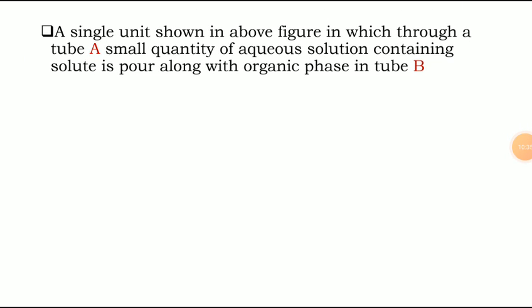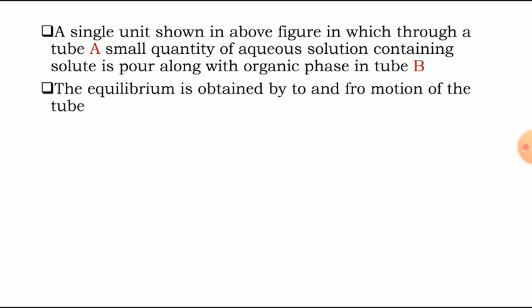The procedure: a single unit is shown in the above figure, in which through tube A a small quantity of aqueous solution containing solute is poured along with organic phase into tube B. The aqueous phase along with the solute particle will be poured into tube B along with the organic phase. The equilibrium is obtained by the to-and-fro motion of the tube — when we shake the tube and then keep it in a stable position, it will acquire equilibrium.